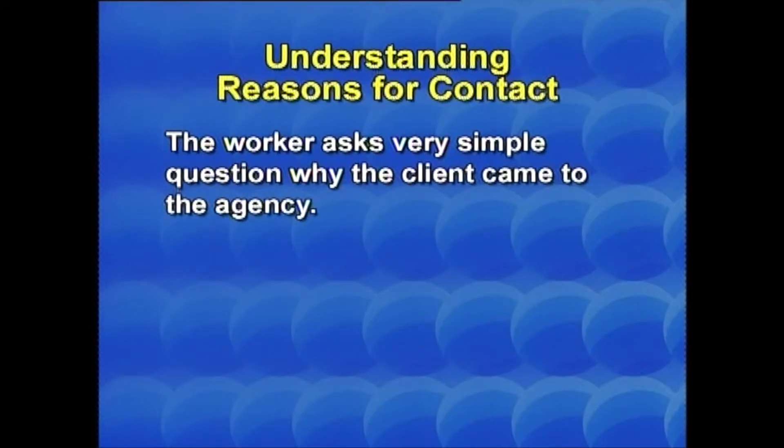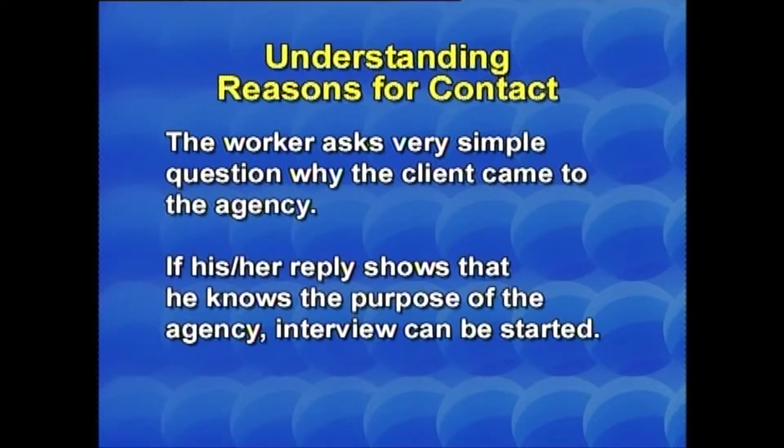Understanding reasons for contact: the worker asks a very simple question — why did the client come to the agency? If the reply shows the client knows the purpose, the interview can begin. If the reply is ambiguous, the worker explains the agency's service. The worker also conducts an interview with the person who referred the client. Sometimes clients fail to recognize their need and the worker has to pursue further, as in casework with poverty groups.